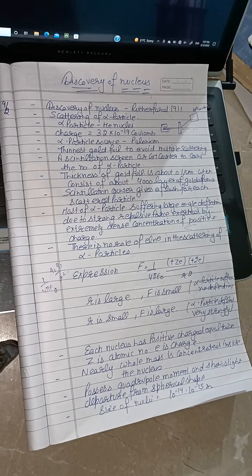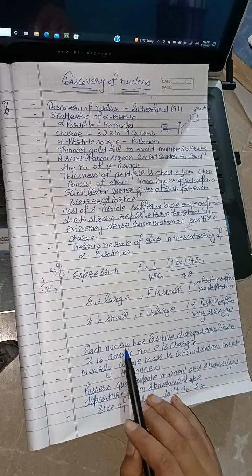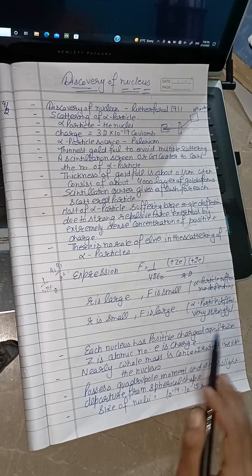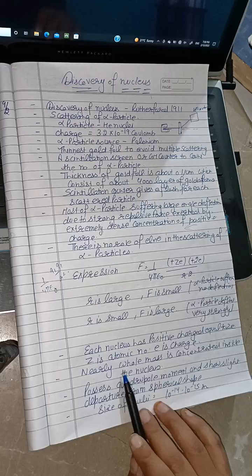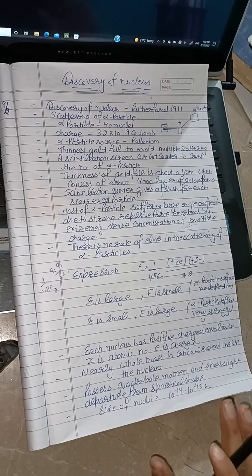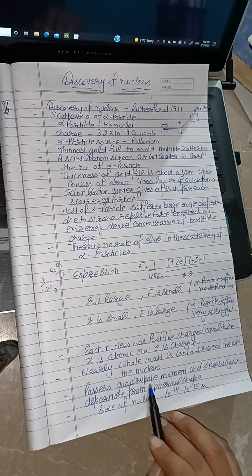Now, some properties of the nucleus: The nucleus has positive charge equal to ZE, where Z is the atomic number and E is the charge. Most of the mass of the atom is concentrated in the nucleus. The nucleus has a quadrupole moment.